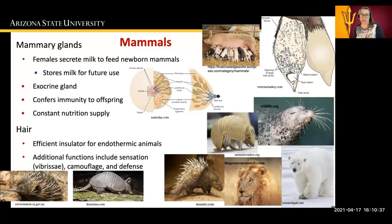The production of milk confers the immunity of the mother to the offspring. In addition to mammary glands, mammals also have hair or fur. Some mammals use their hair or fur as an insulator. They are endothermic and have to regulate their own body temperature, so hair can help insulate the animal, such as a polar bear.